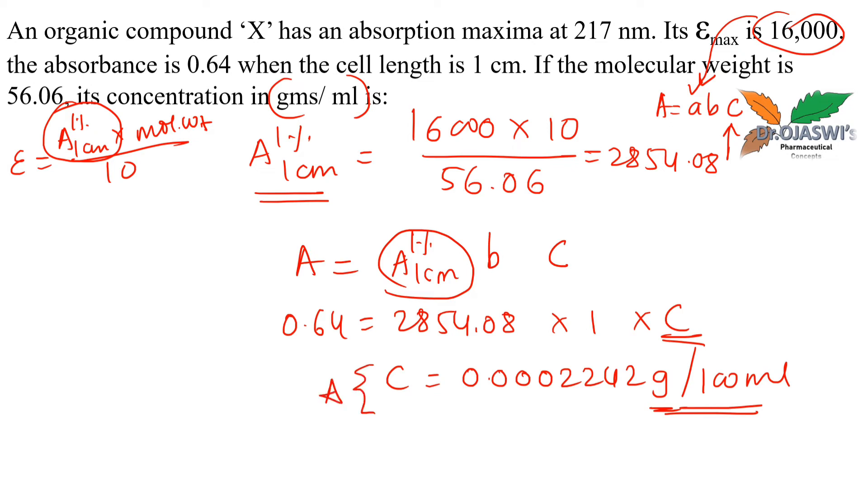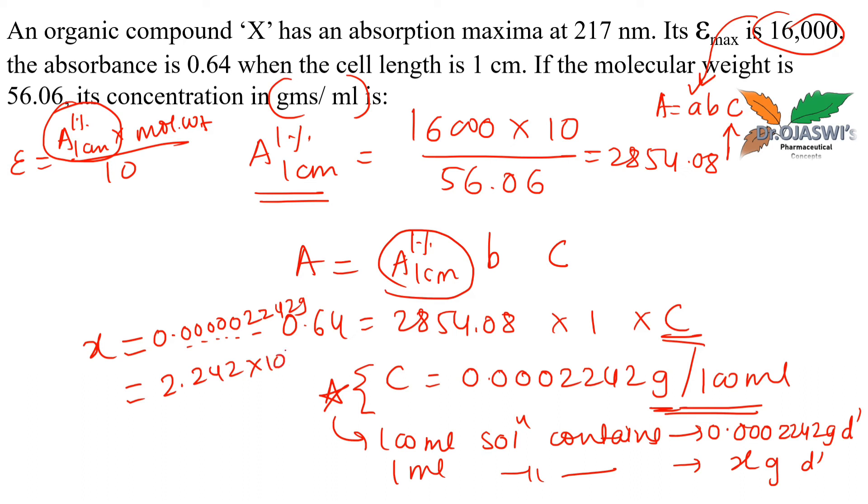To convert to grams per ml: 100 ml solution contains 0.00002242 grams of the drug. So 1 ml will contain, by cross multiplication, 0.000000002242 grams. That's 2.242 times 10 to the minus 6 grams per ml.